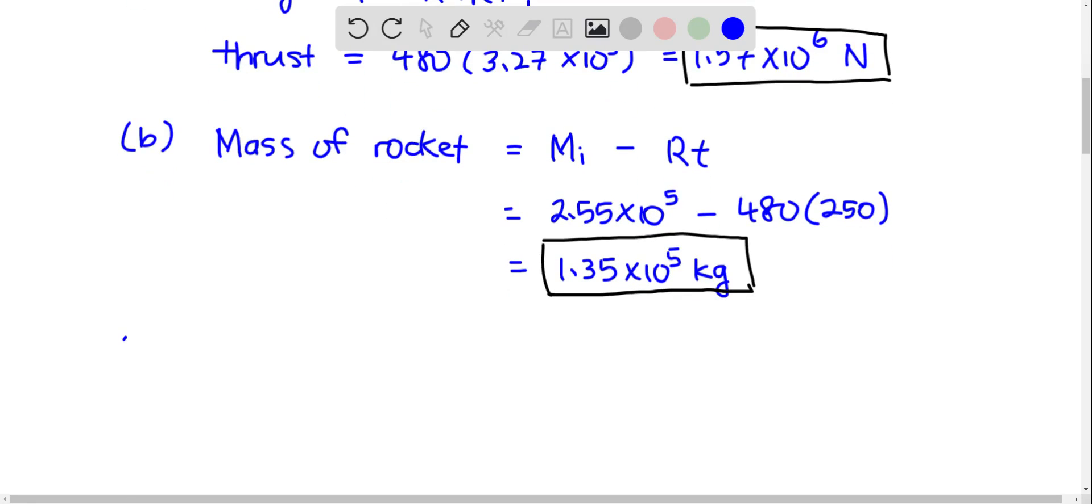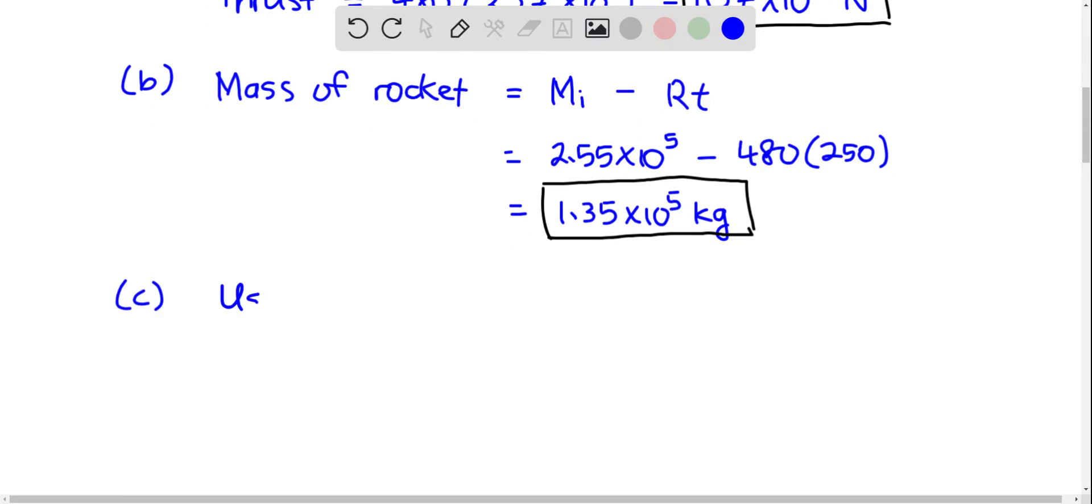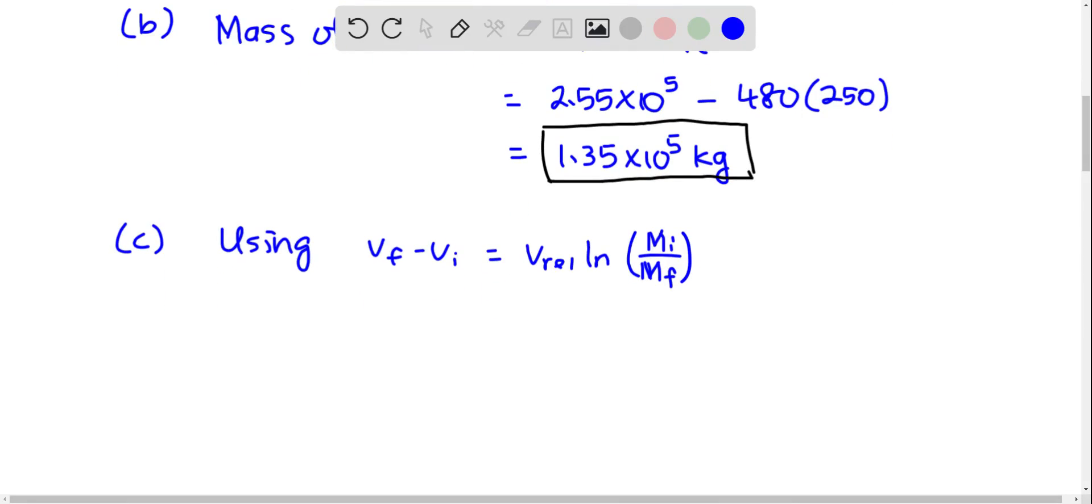And in part C, you want to find the speed of the rocket after that. So we will be using VF minus VI is equal to V relative times natural log of MI divided by initial mass divided by final mass. So the rocket starts from rest. So the final speed will just be V relative times natural log of MI divided by MF.